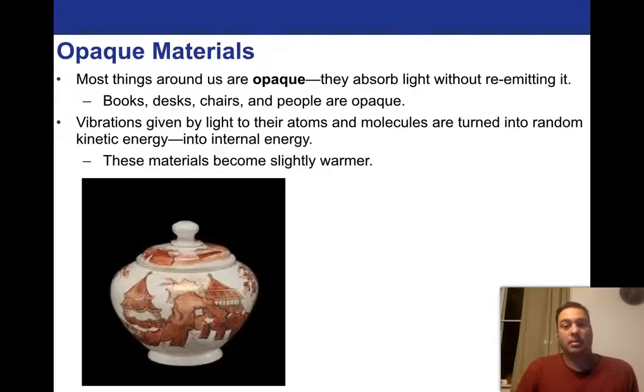Alright. So by comparison, we could talk about opaque materials. So we talked about transparent things. These are opaque things. So most things around us are opaque. They absorb light without re-emitting it. So in other words, the electrons get excited, but that doesn't necessarily mean that's going to emit something back out or through it. And so what's typical of this is books, desks, chairs, and people are all opaque. Here's a vase I found online. It's clearly opaque. Vibrations given by light to their atoms and molecules are turned into random kinetic energy, into internal energy. So when you put light on this, all the different parts of the spectrum that don't actually get re-emitted out as white and red causes the vase to actually get slightly warmer. It's converted into heat energy.